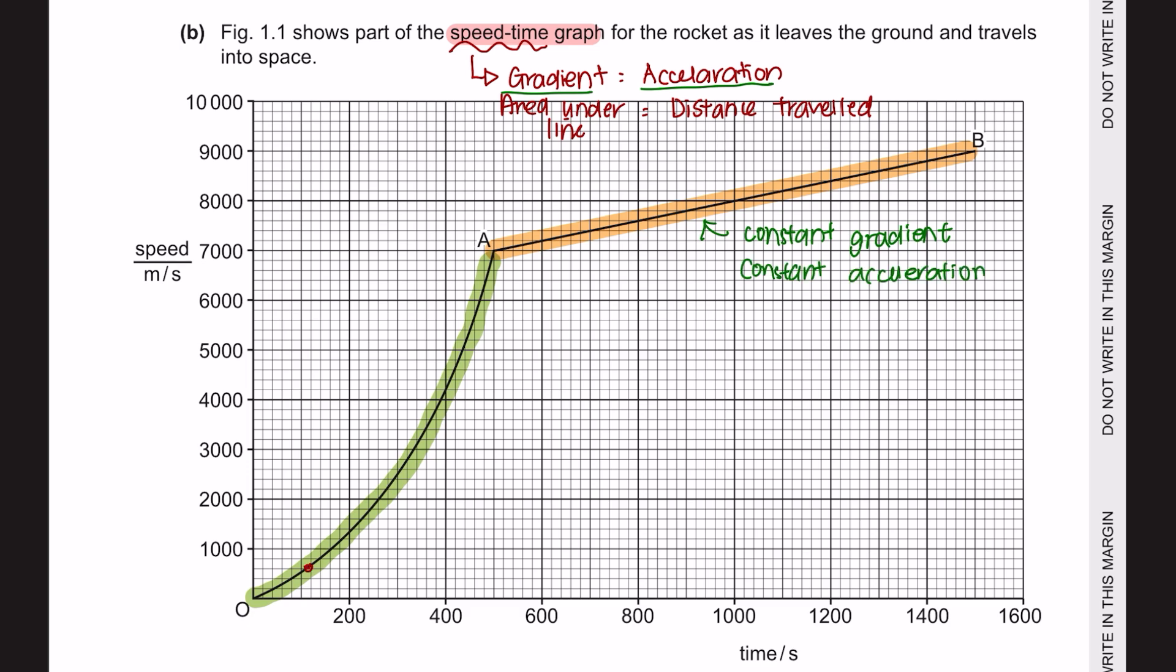From O to A, we do not have a constant gradient, as it is not a straight line. So in order to get the gradient, we have to draw a tangent at each point. And when drawing a tangent, we can see that the gradient is increasing. And gradient is the acceleration. That means from O to A, the acceleration is increasing.